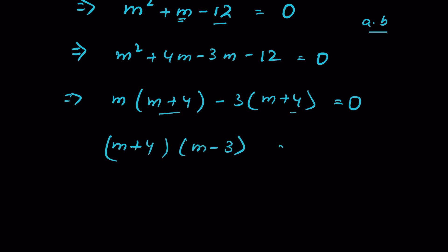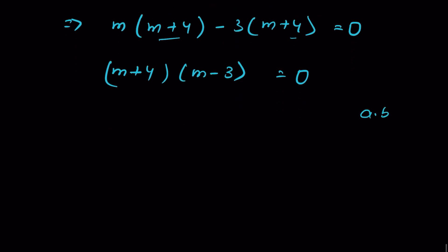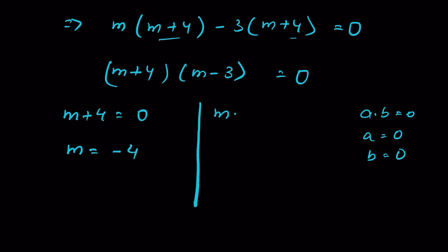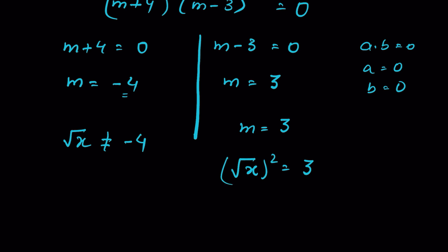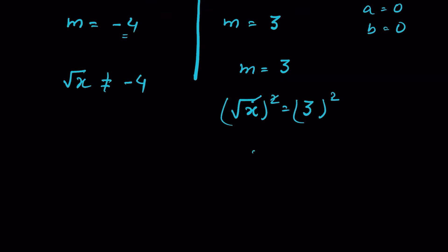Factoring: m(m plus 4) minus 3(m plus 4) equals 0, so (m plus 4)(m minus 3) equals 0. This gives m equals minus 4 or m equals 3. Since square root of x cannot be negative, m equals minus 4 is rejected. Therefore m equals 3, meaning square root of x equals 3, so x equals 9 is the only solution.